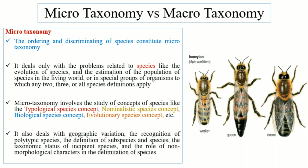In special groups of organisms, 2, 3, or all species definitions apply. We have species of different definitions according to different concepts — first of all, typological, nominalistic, biological, and evolutionary. There is a group of organisms to which more than 2 or 3 definitions apply.